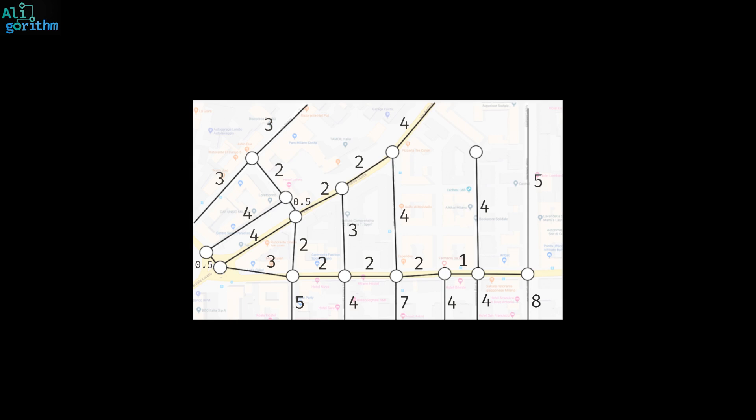The shortest path problem therefore takes as input a directed weighted graph, a source node, and a destination node, and asks to find a path from the source to the destination with the minimum cumulative weight.